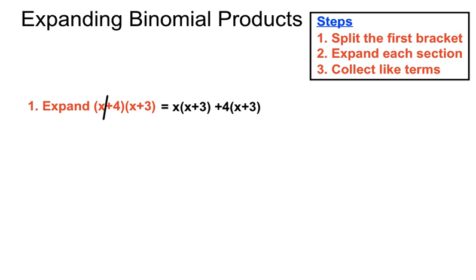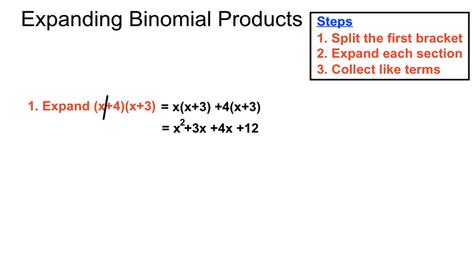We'll expand by splitting the first bracket and then expanding each section. We'll get x squared when we multiply x by x. Then multiplying x by the second term, x times 3 gives us 3x. Moving to the second expansion, 4x is gained by doing 4 times x, and 4 times 3 is 12. Now we've expanded each section. We have a 3x and a 4x — like terms have the same letter and power — so those can be joined. Adding those together gives a final answer of x squared plus 7x plus 12.